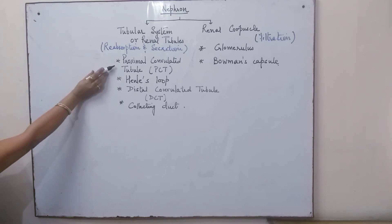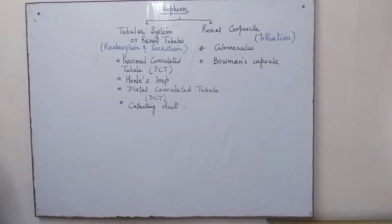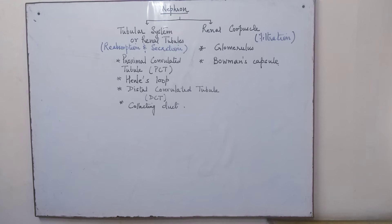The proximal convoluted tubule is known as the PCT, and the distal convoluted tubule will be referred to as DCT. When studying the functioning of the nephron, it is important to understand that nephrons are the filtering units, and whatever electrolytes are filtered — depending upon the metabolic requirement of the body — are again reabsorbed. In this section we will study the role of the renal tubules.